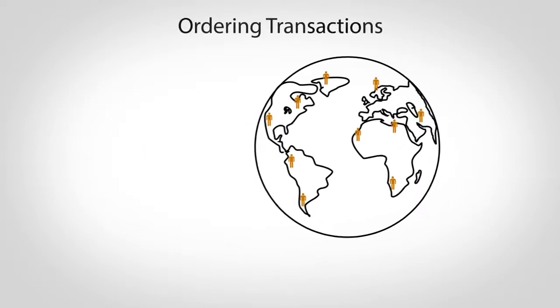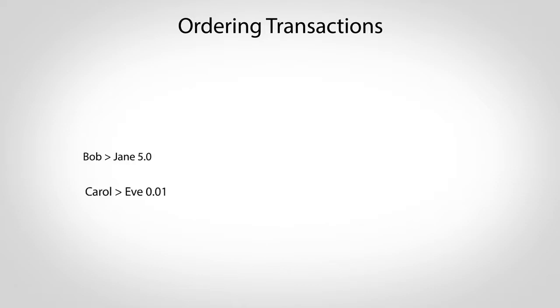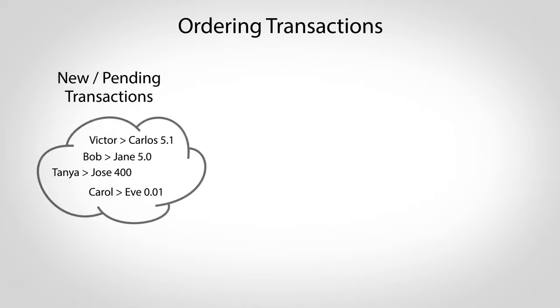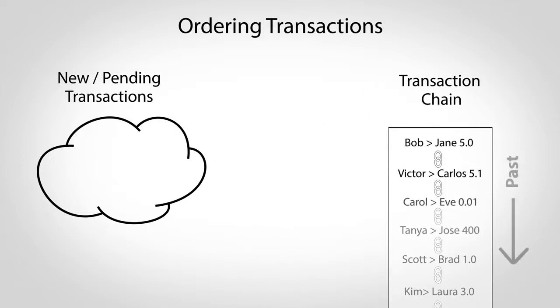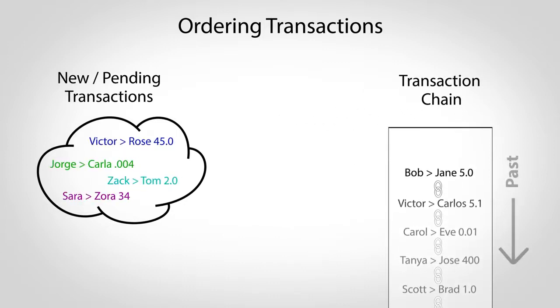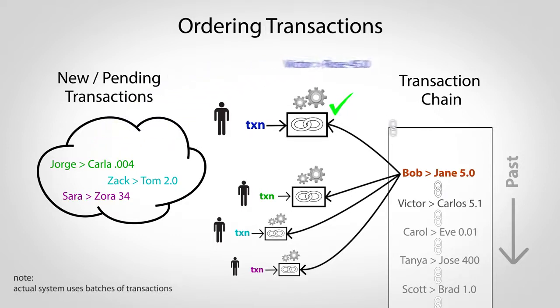Bitcoin prevents this by providing a way for the entire world to decide on transaction order. As new transactions are created, they go into a pool of pending transactions, and from here, they'll be sorted into a giant chain that locks in their order. To select which transaction is next, a kind of mathematical lottery is held. Participants select a pending transaction of their choice and begin trying to solve a special problem that will link it to the end of the chain. The first person to find a solution wins and gets to have their transaction selected as next in the chain.